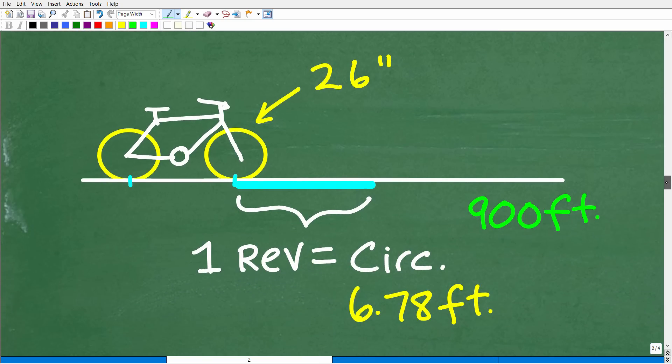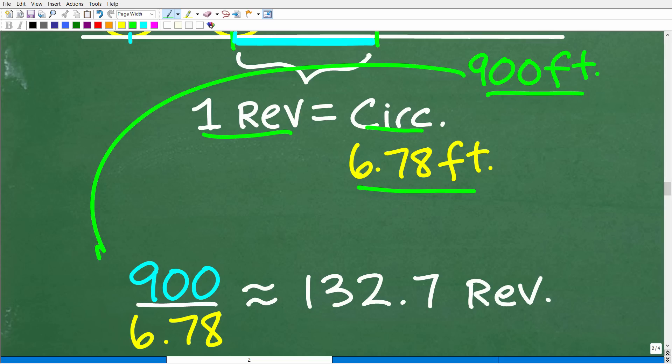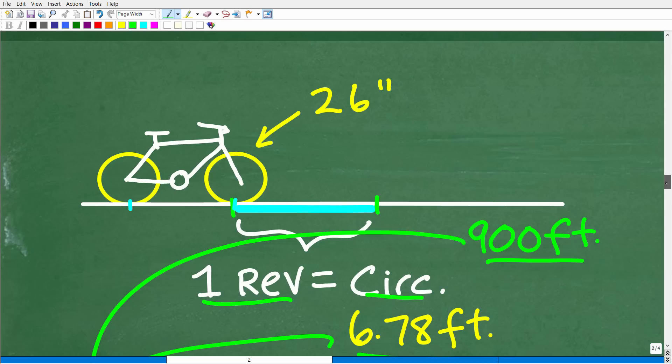So now let's put this together. Here is our 26-inch tire. We know one revolution of these tires is going to be equal to the circumference, which is about 6.78 feet. And he has 900 feet to cover. So how many revolutions, or how many circumference lengths, will fit into this 900 feet? Well, this is just a basic division problem. So we're just going to take that 900 feet and divide it by the circumference, the length of the circumference. So 900 divided by 6.78 gives us approximately 132.7 revolutions. And this is how many times Ed's bike tires will turn more or less during the course of his 900-foot trip.